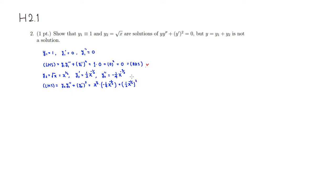So what we get: the constant is negative 1/4. Combining x to the 1/2 and x to the negative 3/2, that's 1/2 minus 3/2, giving x to the negative 1. Then 1/2 squared is positive 1/4, and x to the negative 1/2 raised to the second power is x to the negative 1. These cancel out, giving 0, which is the right-hand side. This verifies that y2 is a solution.